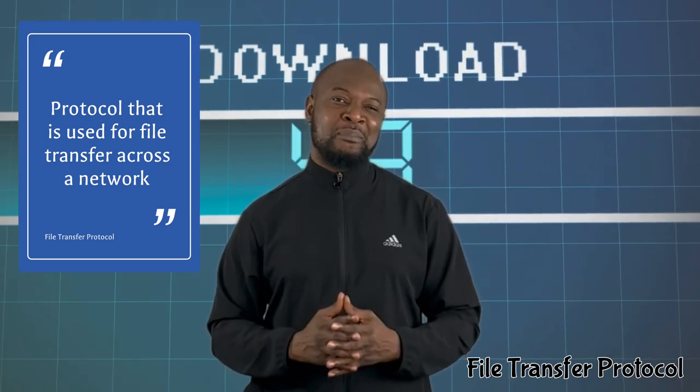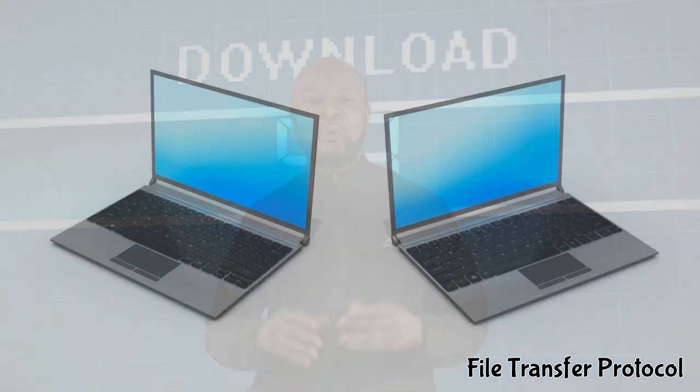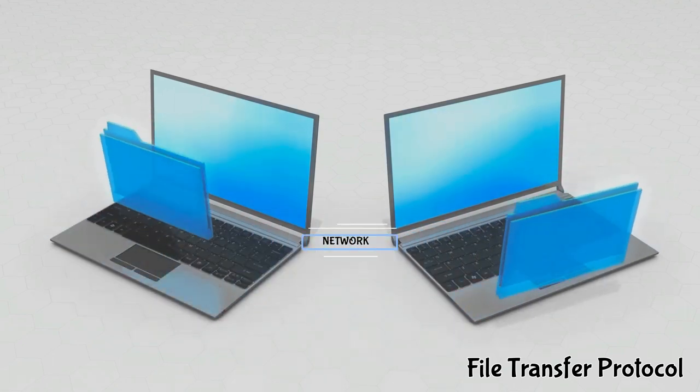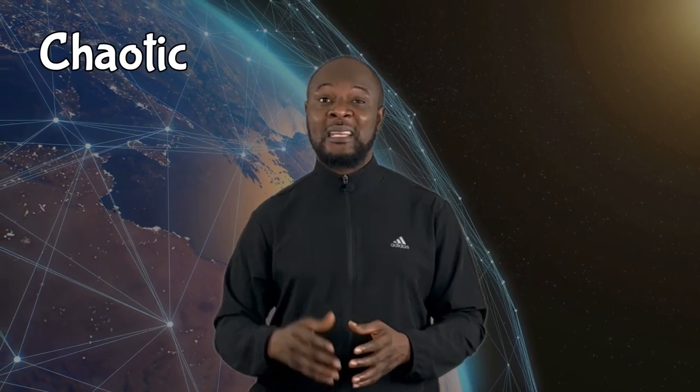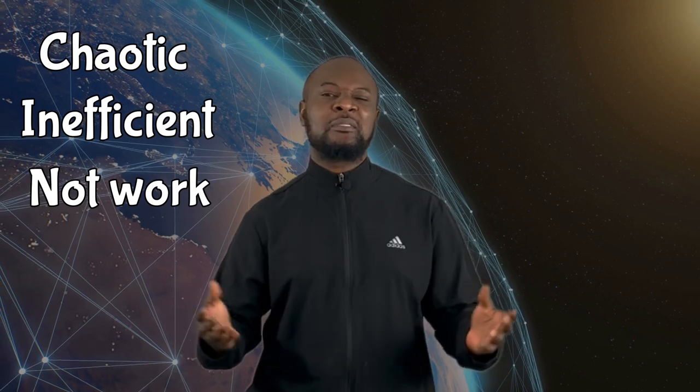What does this really mean? When you have two computers connected to each other, you get a simple network. Now if you want to transfer anything from one computer to the other on that simple network, you don't just go around sending stuff without fulfilling some requirements. Otherwise things will become chaotic and inefficient, or may even not work in the first place. This is because the transfer process will not make much sense if there were no standards to guide it — and this is just speaking of only two computers.